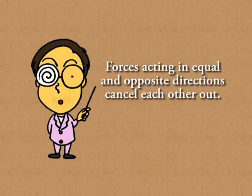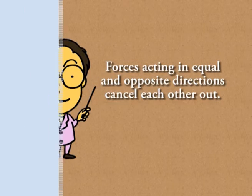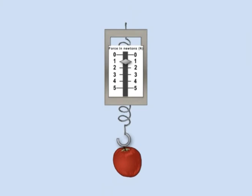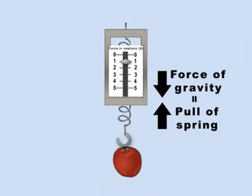When forces act in equal and opposite directions, they cancel each other out. We can see this with the force meter when it is used to measure weights. The spring stretches until the downward force of gravity balances the upward pull of the spring trying to return to its original coiled state.